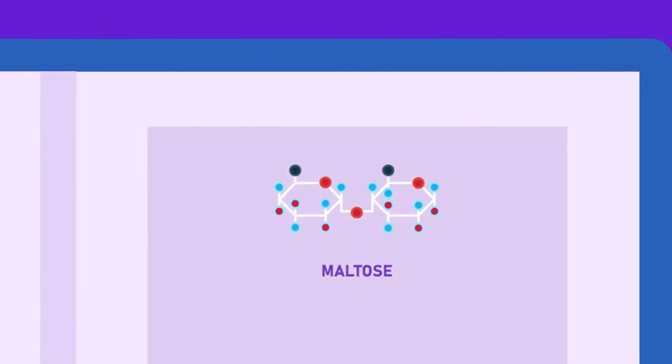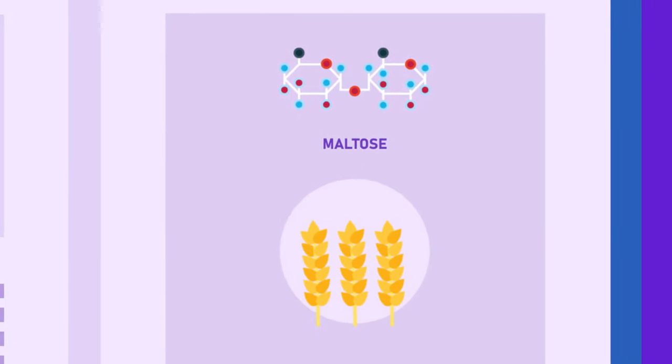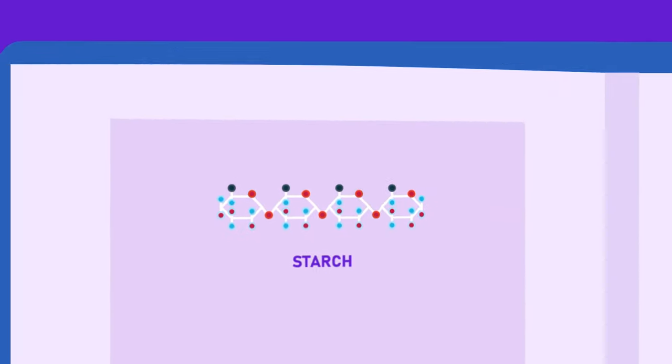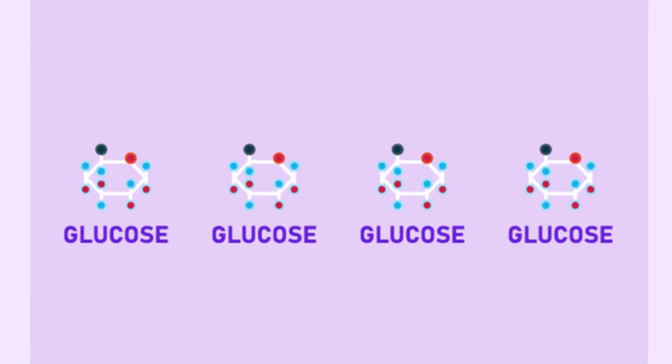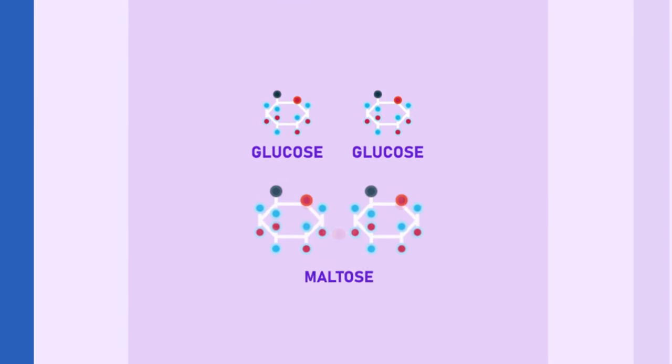Maltose, known as malt sugar, is present in malted cereals and sprouting grains. It is formed from the partial digestion of starch and is a combination of two glucose molecules.